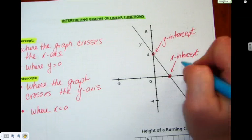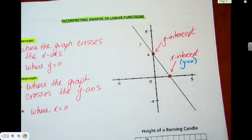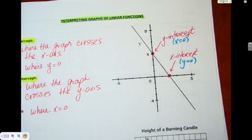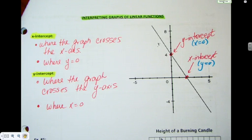So, x-intercept, that's where the other coordinate equals zero. Y-intercept is where x equals zero. Why do we need to know this? What's the purpose? Well, let's look at the situation.